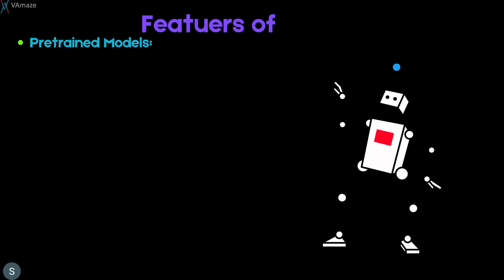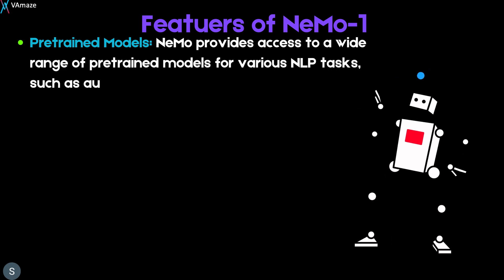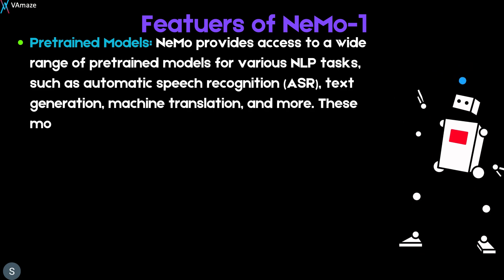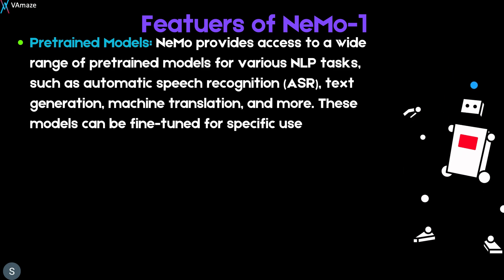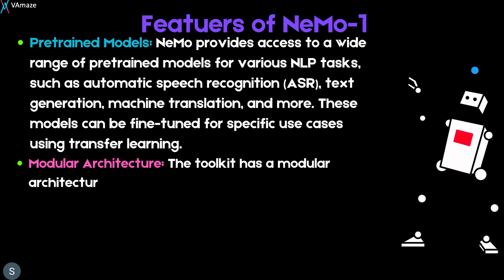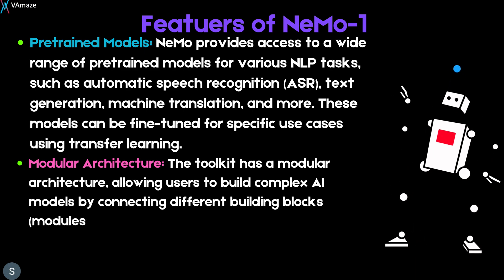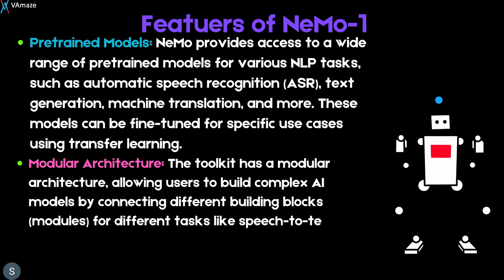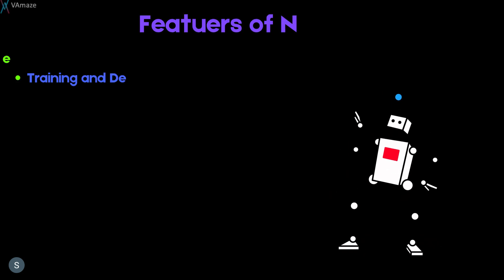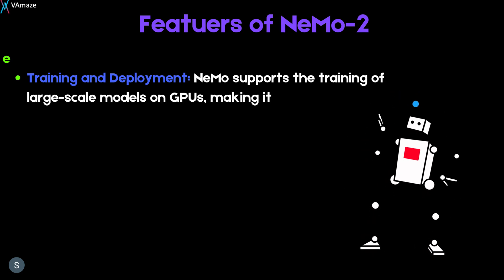Nemo provides access to a wide range of pre-trained models for various NLP tasks such as automatic speech recognition, text generation, machine translation, and more. These models can be fine-tuned for specific use cases using transfer learning. The toolkit also has a modular architecture, allowing users to build complex AI models by connecting different building blocks for tasks like speech-to-text, text processing, and text-to-speech. It supports training of large-scale models on GPUs efficiently.